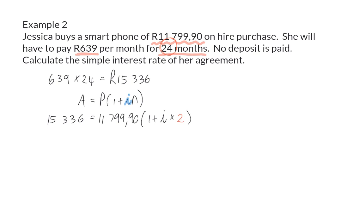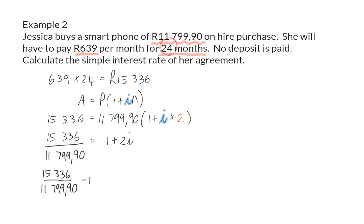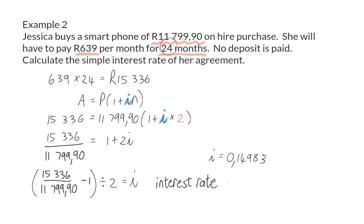So now we can solve i. We will do this by first dividing the left-hand side by our starting or original value, and then on the right we'll have what's left inside the bracket: the 1 plus 2 times i. Next we will subtract 1 on the left-hand side and then finally divide the whole left-hand side by 2 to solve i. This means that i will be 0.14983, and to change this to an interest rate we need to multiply by 100, so that will be 14.98% per annum.